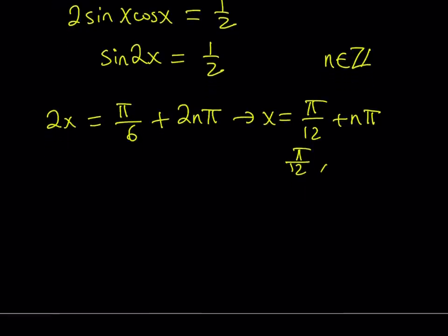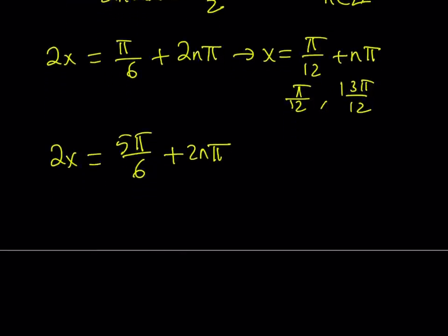And if you add pi to it, it's going to be 13 pi over 12. Great. Those are particular solutions. The other branch is setting it equal to 5 pi over 6. And of course, adding the 2n pi. The n value doesn't really matter here. It's just an integer. And now, from here, we get x equals 5 pi over 12 plus n pi, like before. And you're going to get 5 pi over 12 and 17 pi over 12. We've got to make sure that everything is less than 2 pi if we are looking for solutions on that interval. So these are the solutions. And this brings us to the end of the first method.